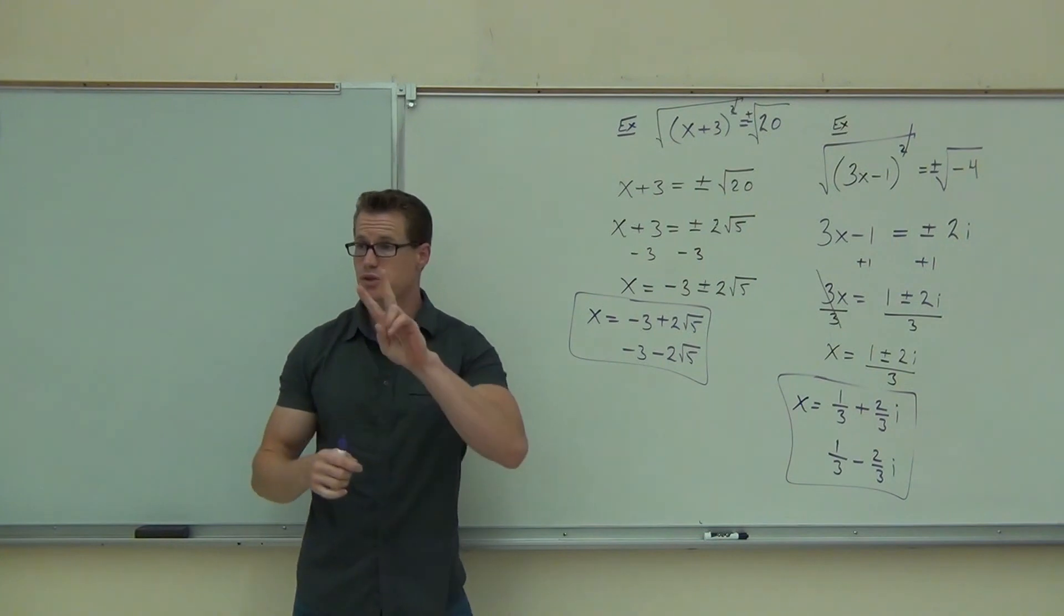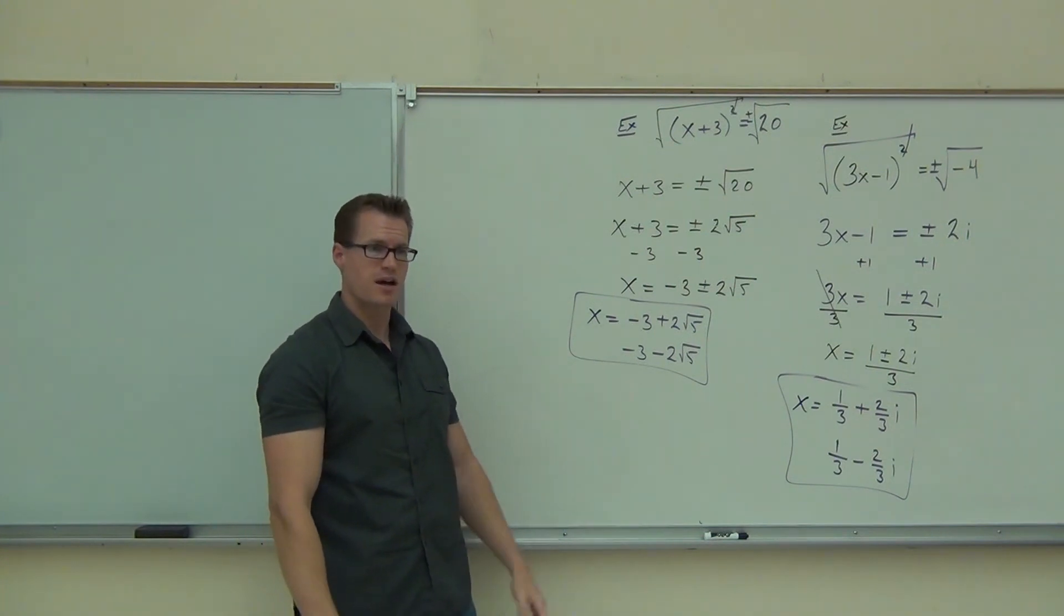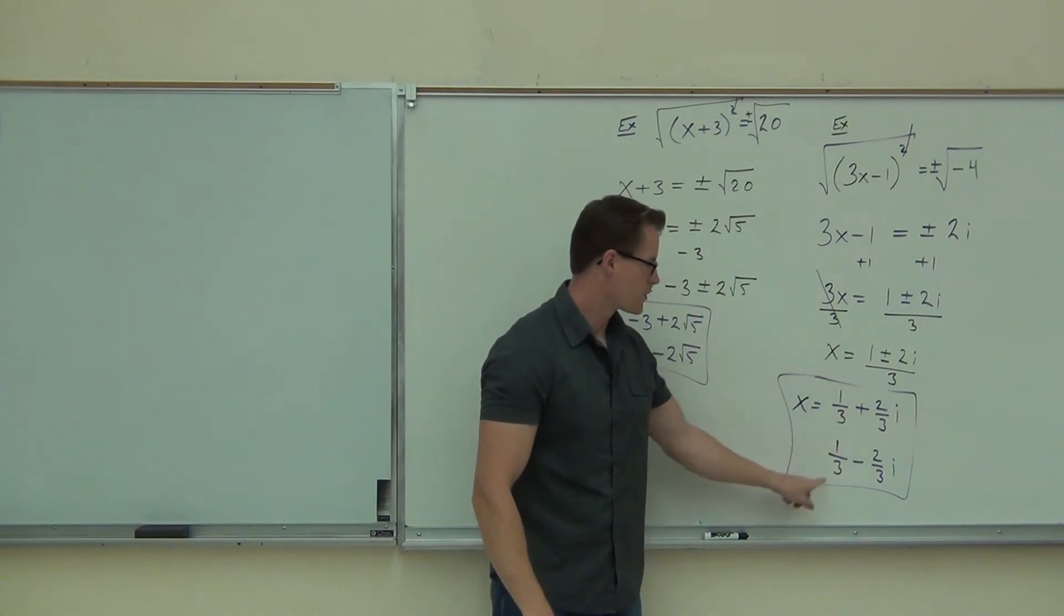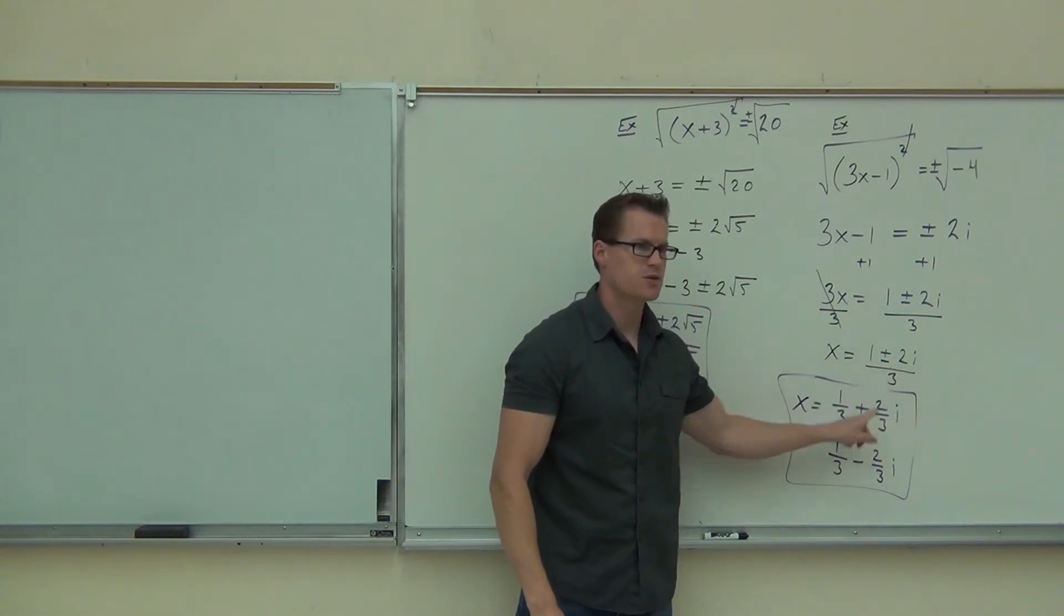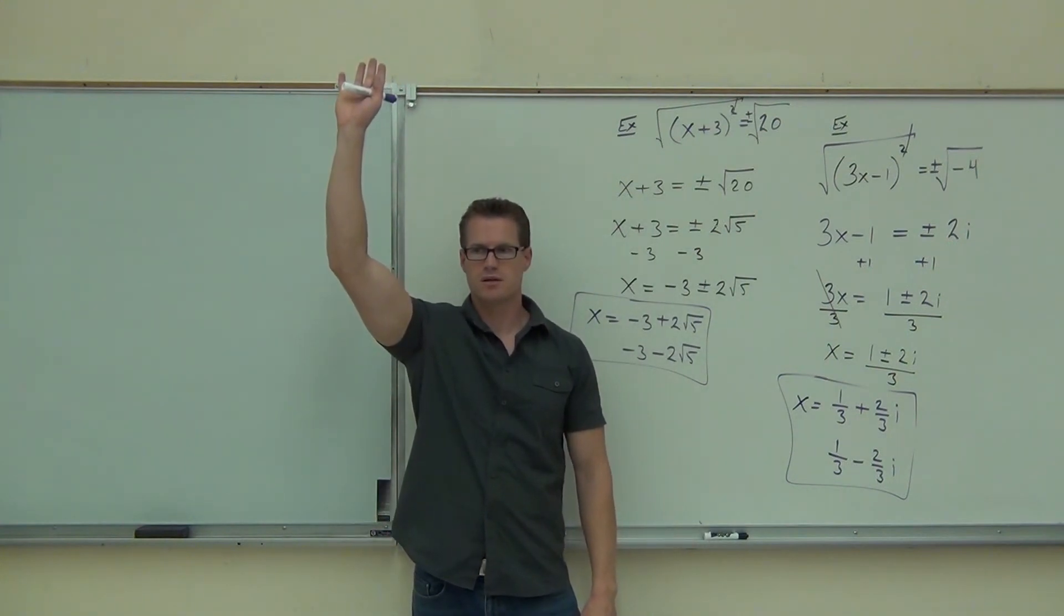So, two things. Two solutions, and we split it up into complex numbers. Do you have complex numbers now? Yeah, I think so. You've got real part, 1 third, 1 third. Imaginary part, positive 2 thirds i, negative 2 thirds i. I'm going to feel okay with what we've just done.